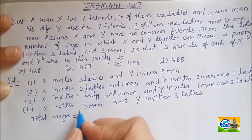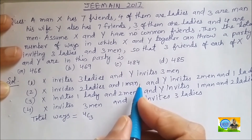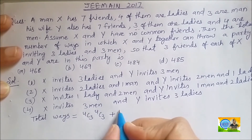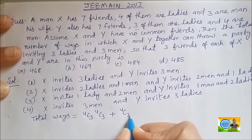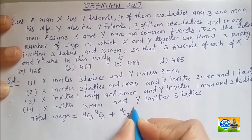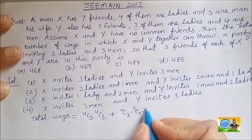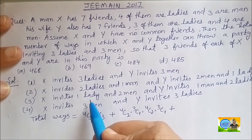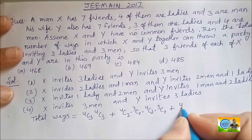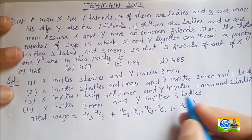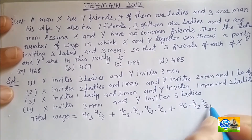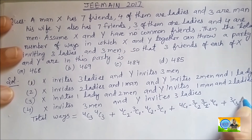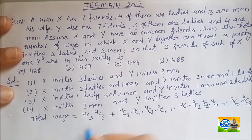For Case 1: out of 4 ladies, 3 are invited — that is C(4,3); out of 4 men (Y's side), 3 are invited — that is C(4,3). For Case 2: C(4,2) × C(3,1) for X, and C(4,2) × C(3,1) for Y. For Case 3: C(4,1) × C(3,2) for X, and C(3,2) × C(4,1) for Y. For Case 4: C(3,3) × C(3,3).